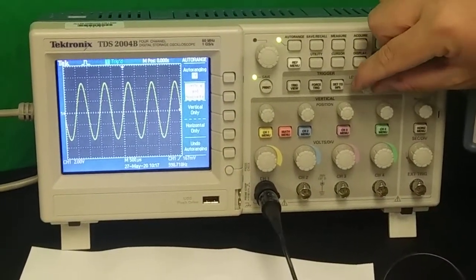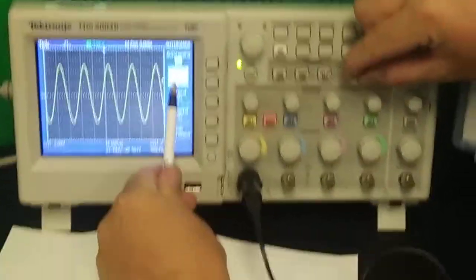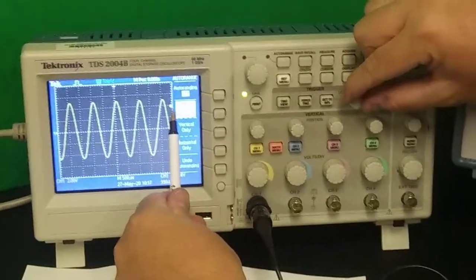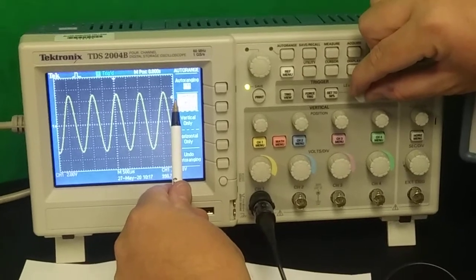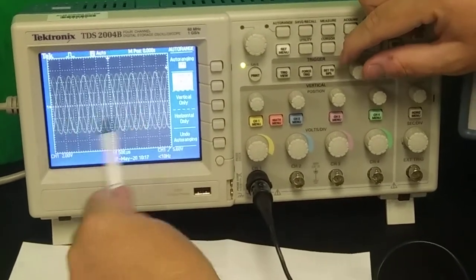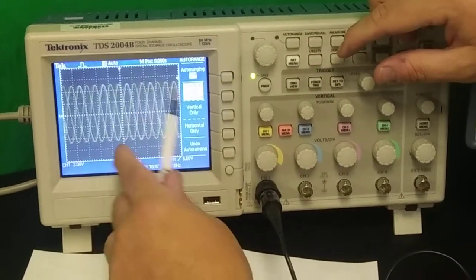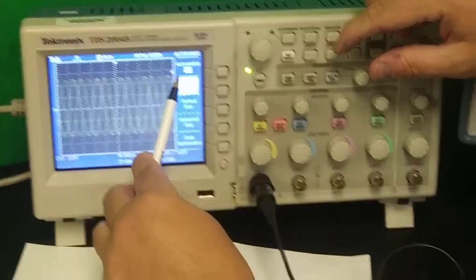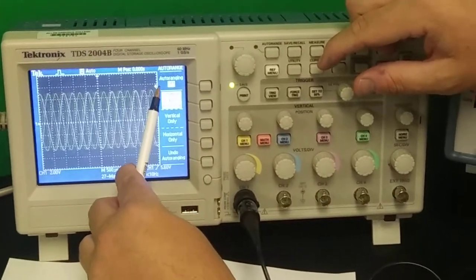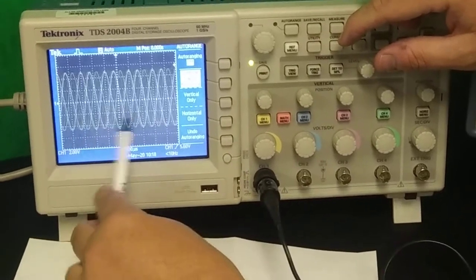Now check this out. I want to show you a deliberate mistake. I'm going to raise the triggering level up, up, up, raising the triggering level up. Watch what happens when I get the triggering level too high. Right now, the waveform is having trouble reading. Why? You're telling the computer, this scope, anytime the waveform hits this level and is rising, start the wave. Well, it never gets to that level, so it never knows where to start.